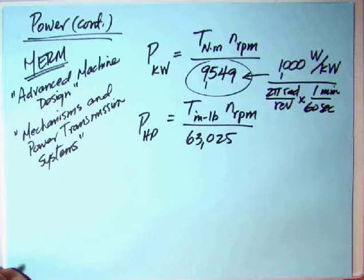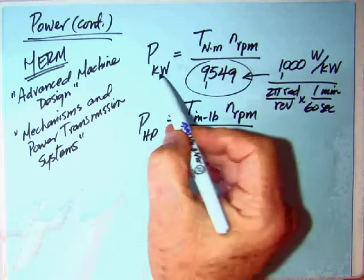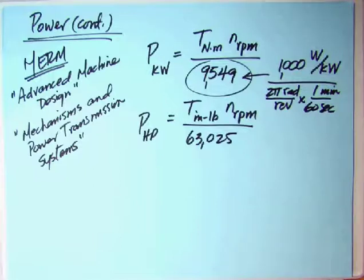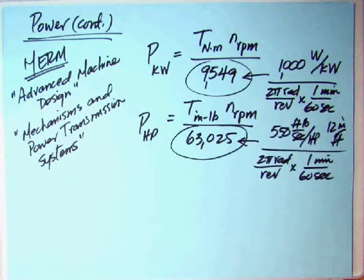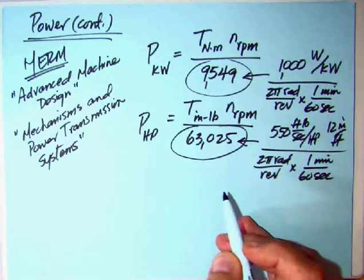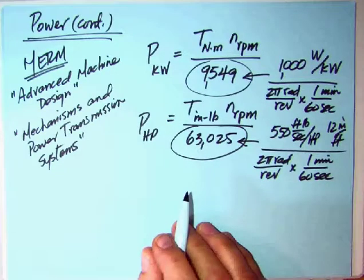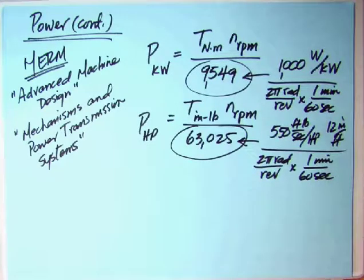The 9,549.3 roughly is the conversion from watts to kilowatts and the conversion on the speed from RPM to radians per second. My argument is this is a dangerous equation. You can get around all of this by converting that angular velocity in RPM to radians per second up front. The 63,025 is the 550 foot-pound per second conversion, the 12 inches per foot, and the conversion from RPM to radians per second. These are dangerous equations because they have to have the units as specified.